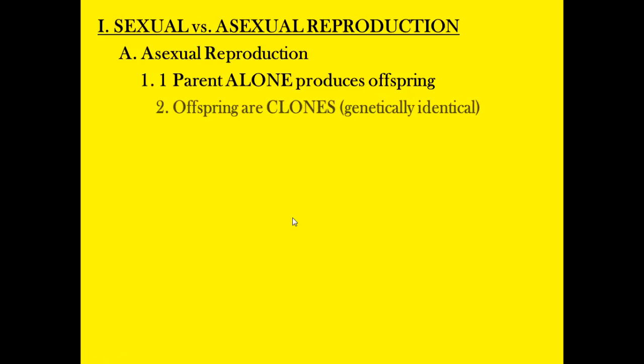Asexual reproduction — we just looked at this with mitosis, which is a form of asexual reproduction. It's where you have a single parent, that first one parent cell, and it by itself produces the offspring. So we don't have any second parent contribution. The offspring are clones, meaning they are genetically identical to their parent, and there's no variation or no difference in their genetic makeup, with the exception of the possibility of what mutations bring.